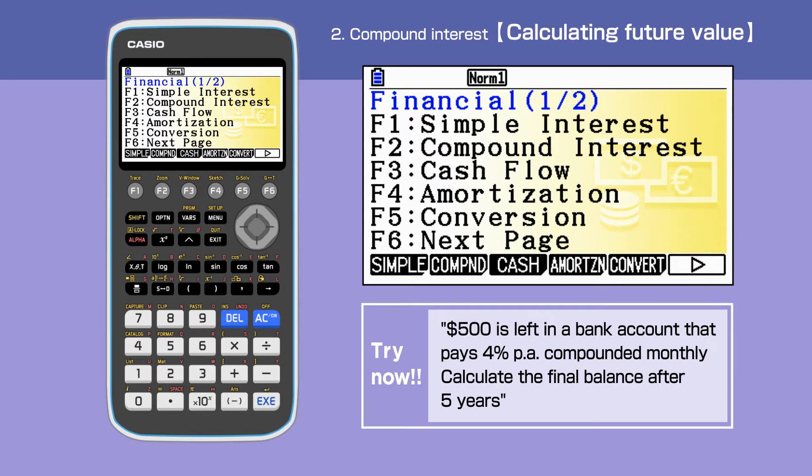Let's look at the example. $500 is left in a bank account that pays 4% per annum, compounded monthly. Calculate the final balance after 5 years.